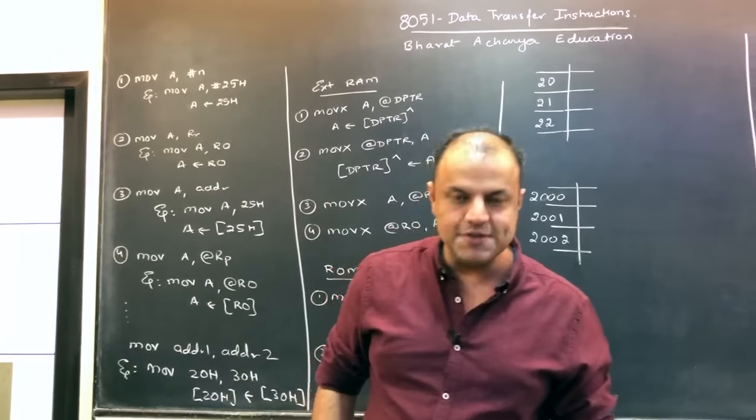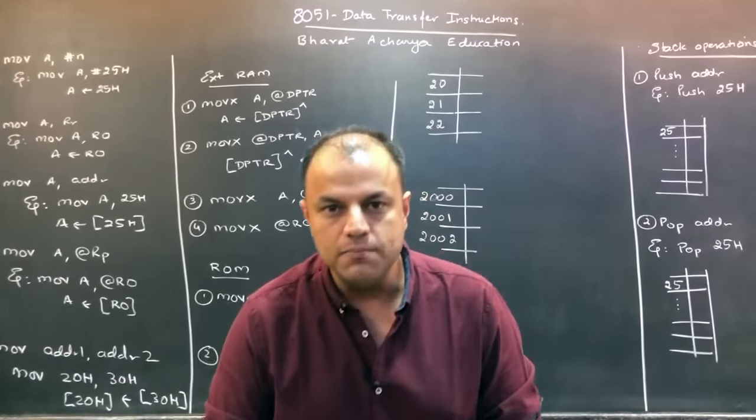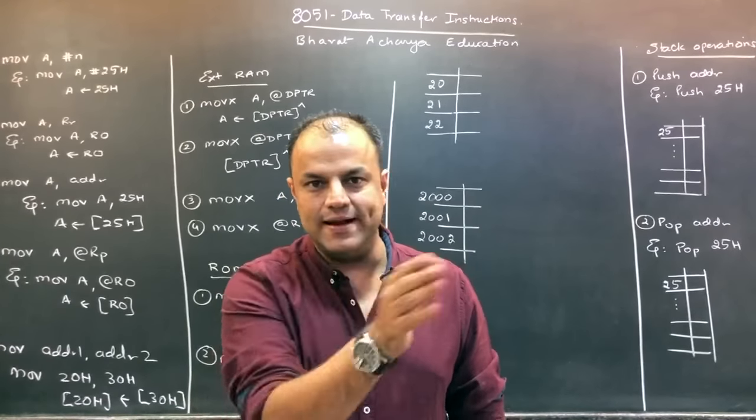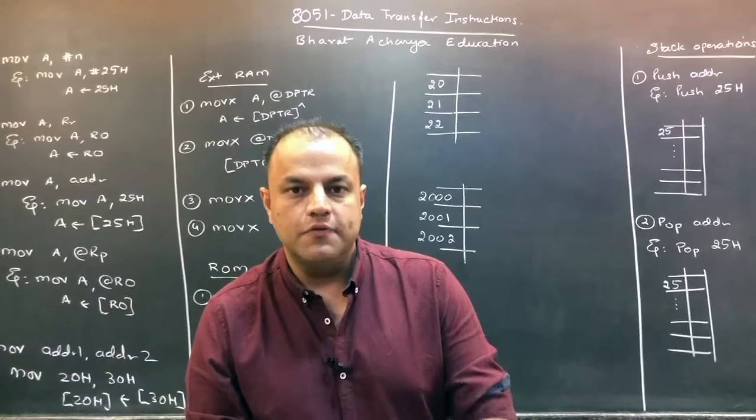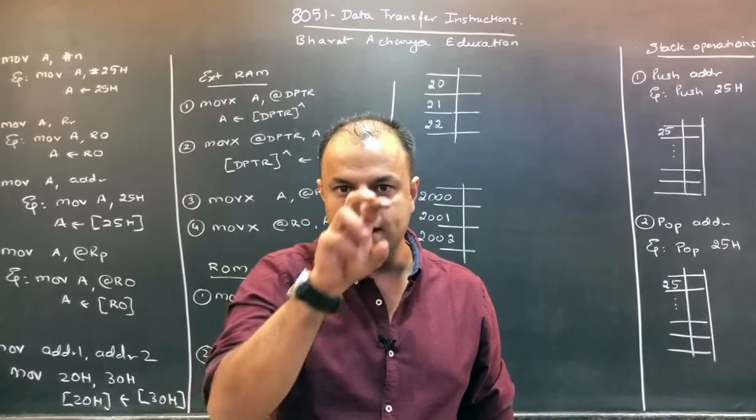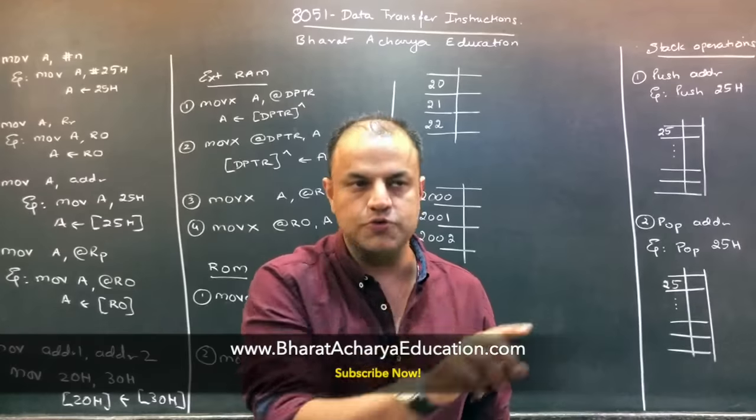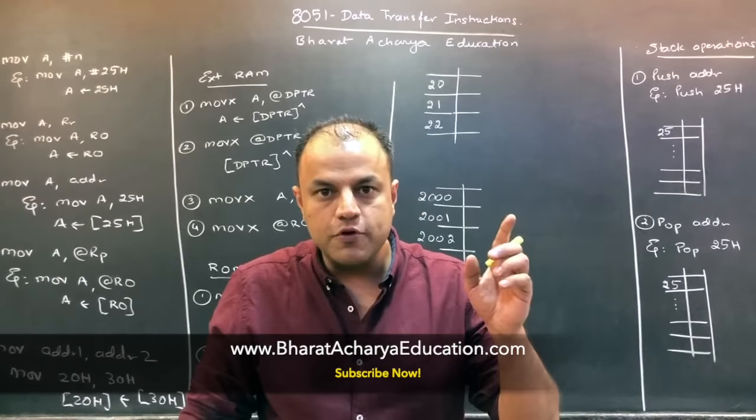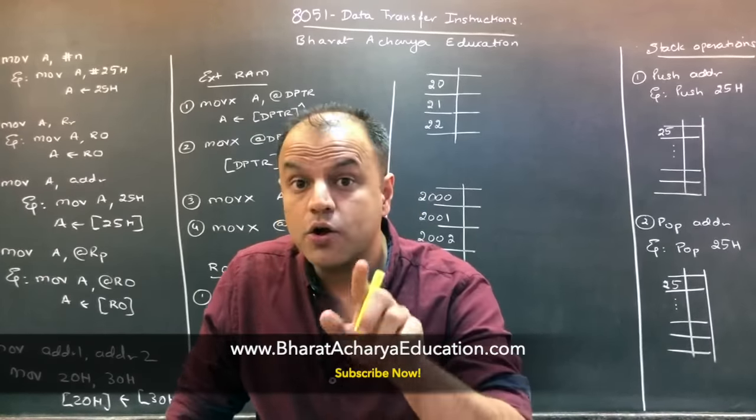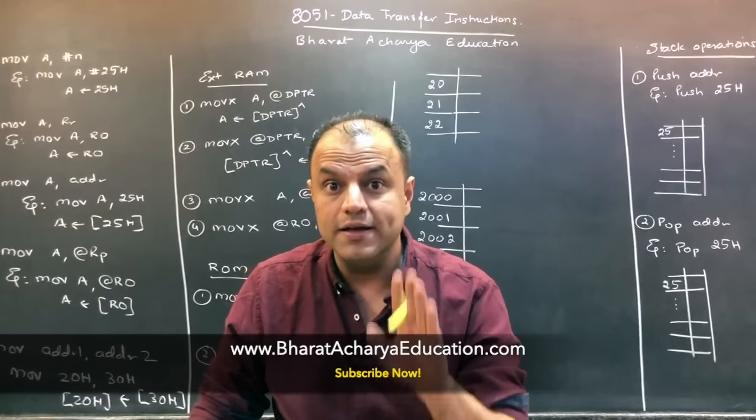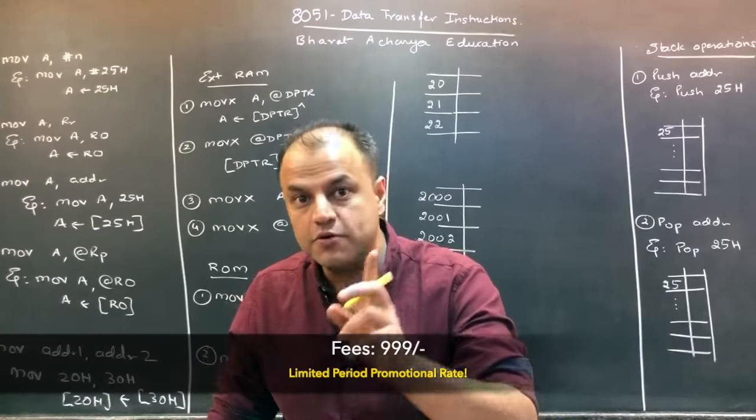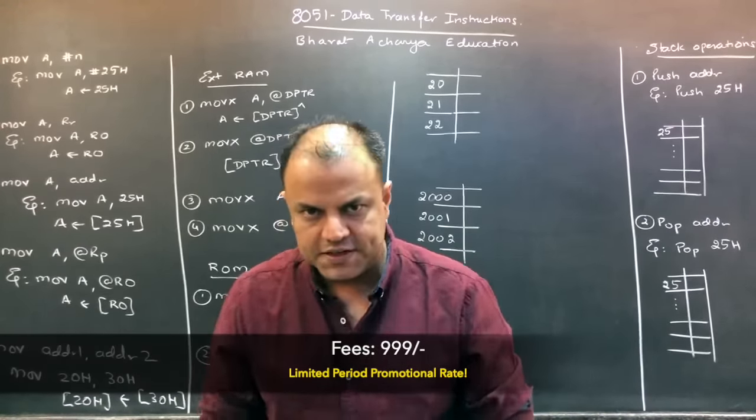Most of these instructions are move instructions. When you write a move, you write two operands: X and Y. The first operand is always the destination. So the syntax goes move destination comma source. The data will be copied from the source to the destination. Data will be copied, there is no cut. Data will remain in the source but will also get copied into the destination.